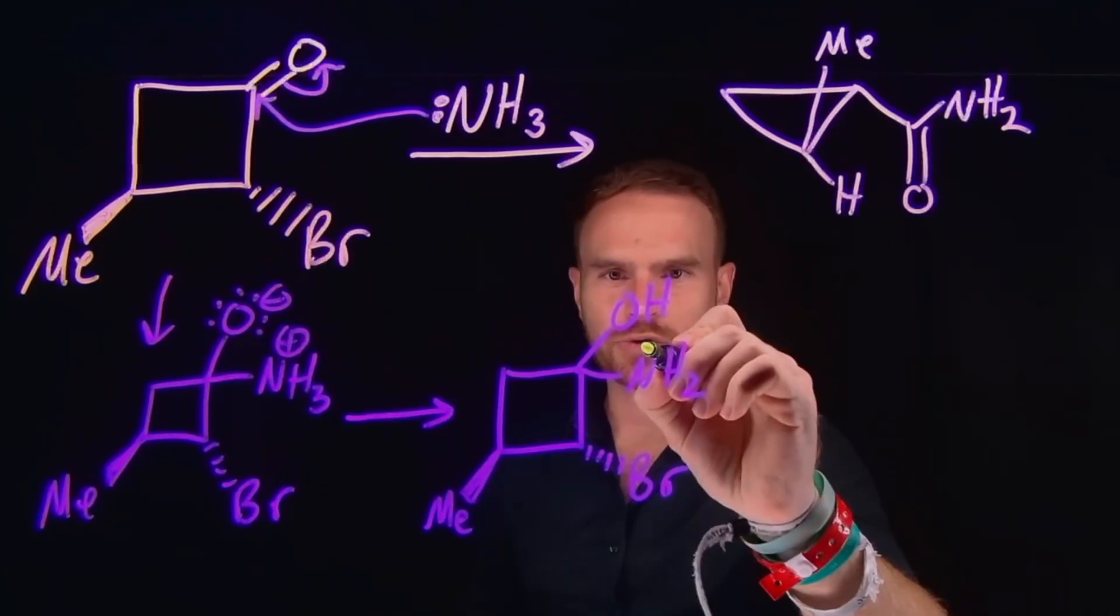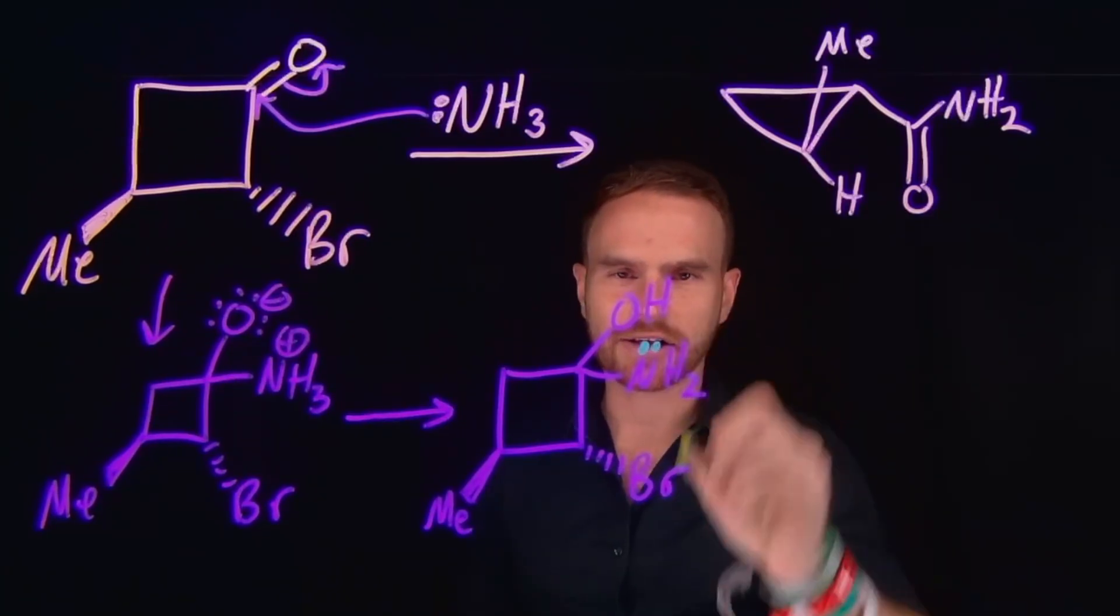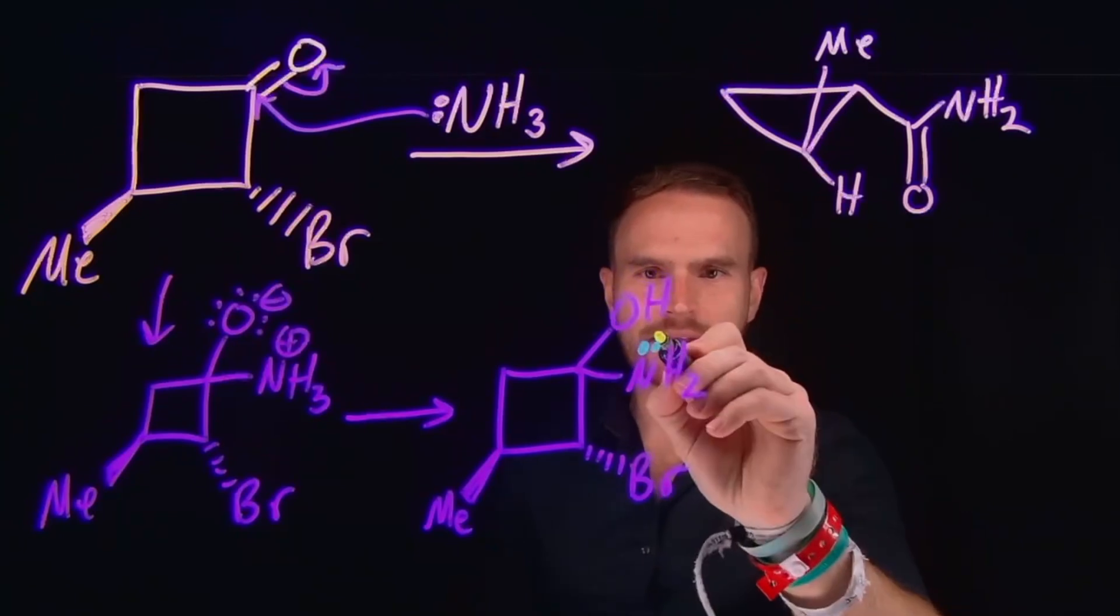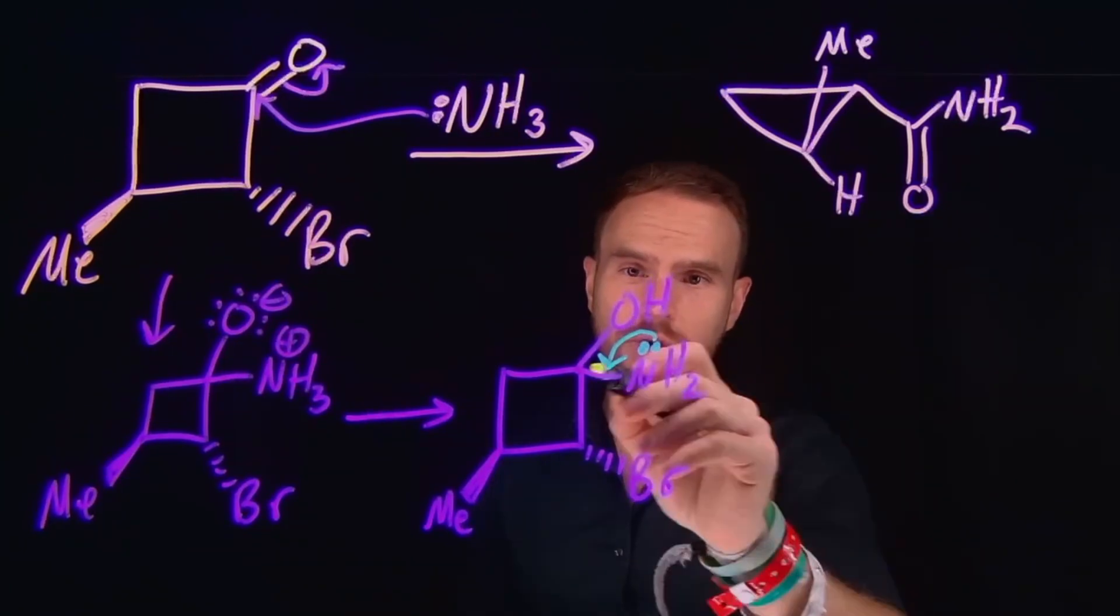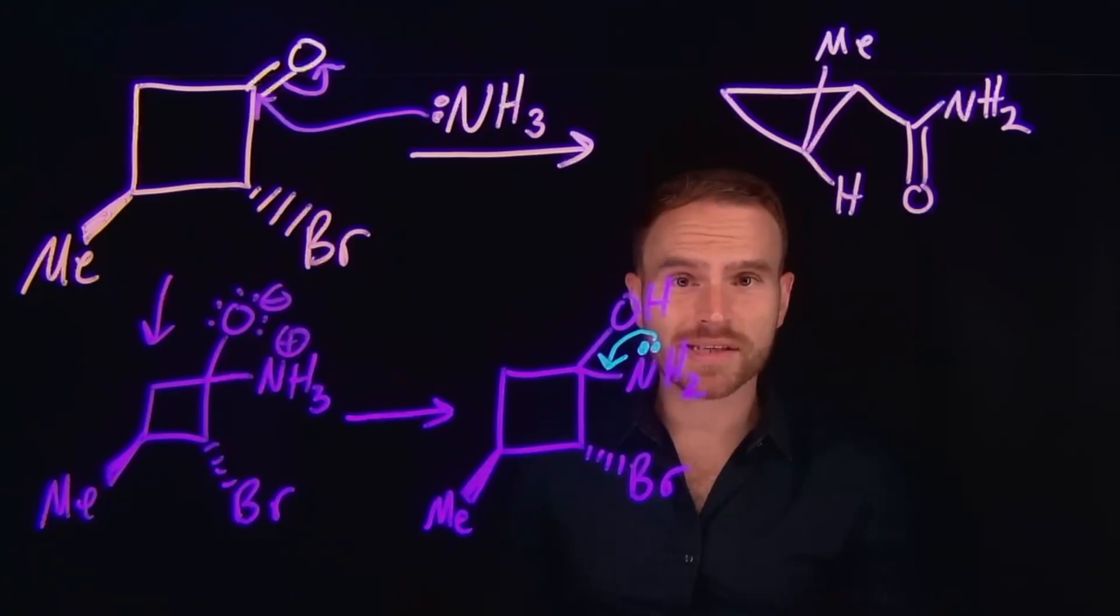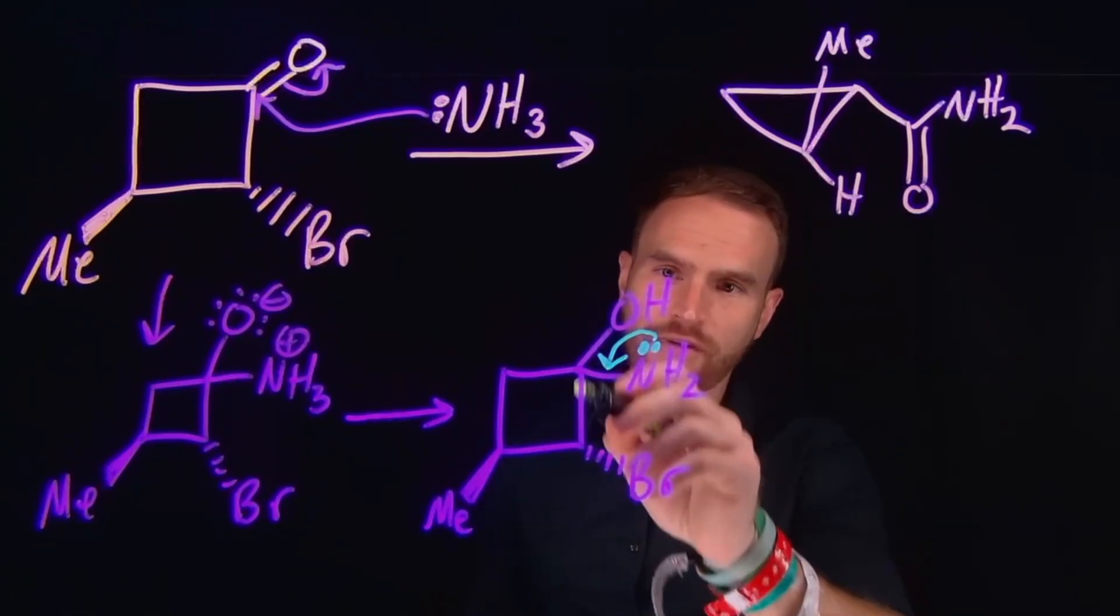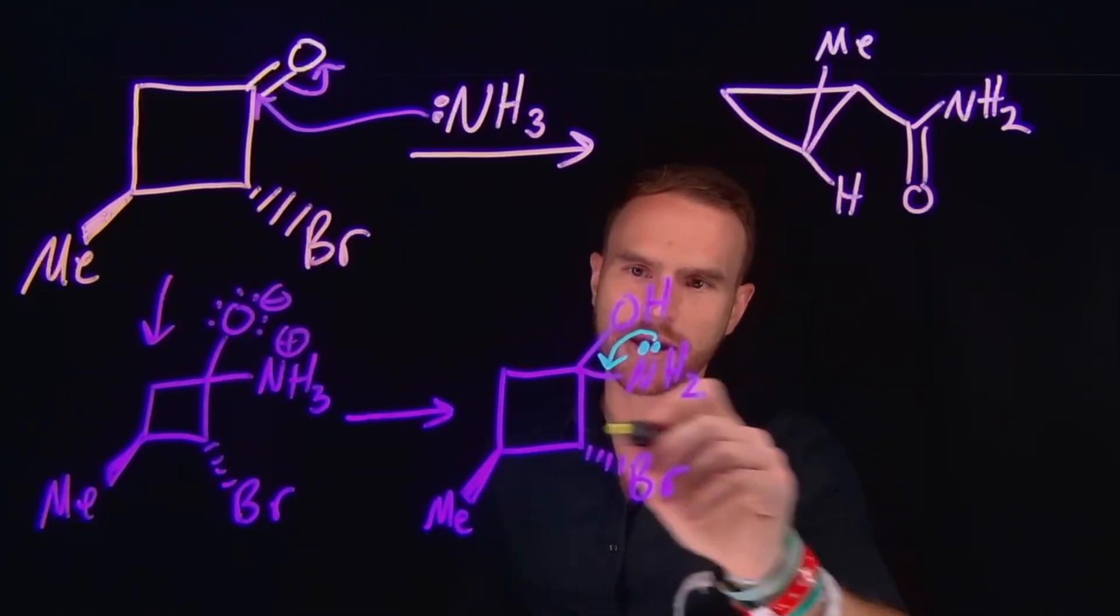At this stage, our nitrogen has now become neutral and it's got a lone pair on it. So what can happen is that lone pair of electrons can come down to form an ammonium ion where you're forming a new carbon to nitrogen double bond. And what this is actually going to do, because that would end up with five bonds to carbon, is actually going to break open this ring.